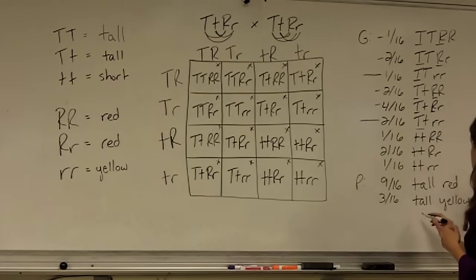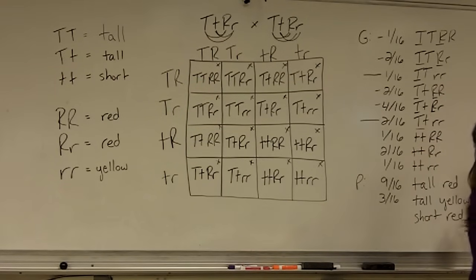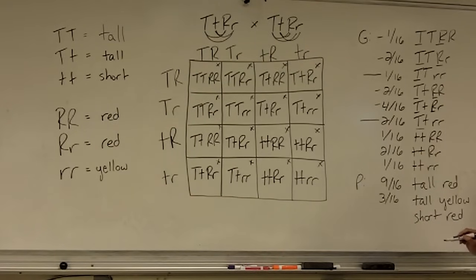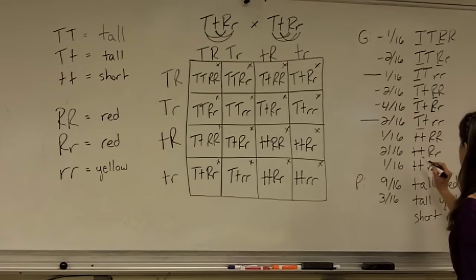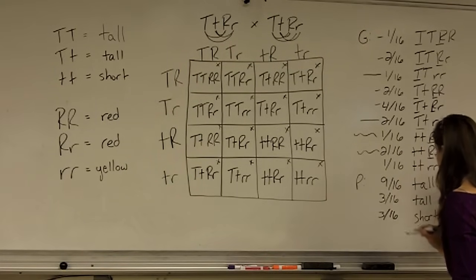Next possibility, they could be short and red, which means that they're going to have no big T, but a big R. So what falls into that? This one right here, big R, and this one right here. So again, three sixteenths.